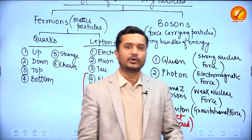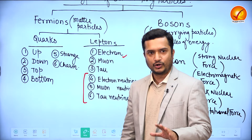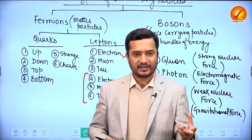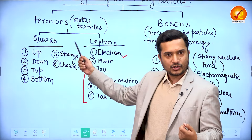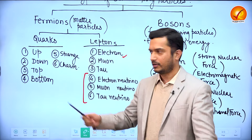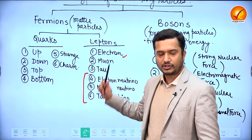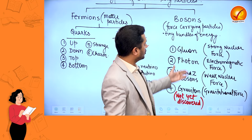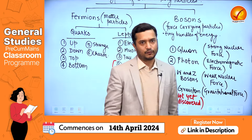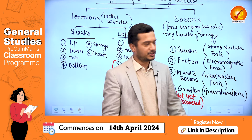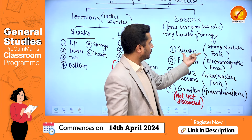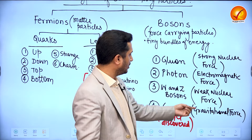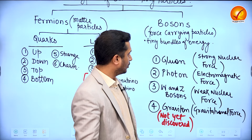So this is what the whole universe is made up of. The whole universe is made up of either matter or energy. The elementary particles of matter are called fermions, divided into quarks and leptons. For energy, we have four kinds of force carrying particles corresponding to the four fundamental forces: gluon for strong nuclear force, photon for electromagnetic force, W and Z bosons for weak nuclear force, and graviton for gravitational force.